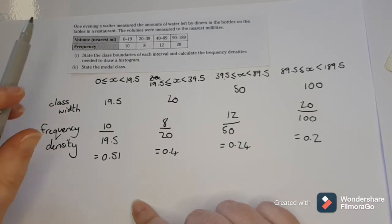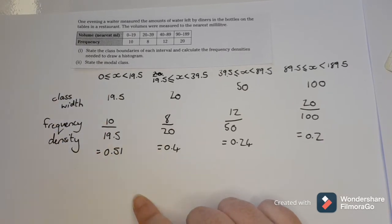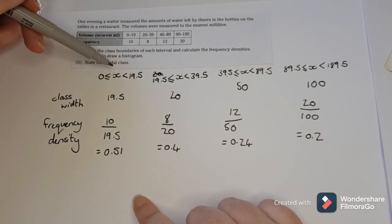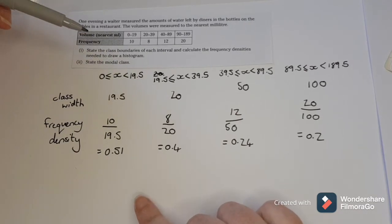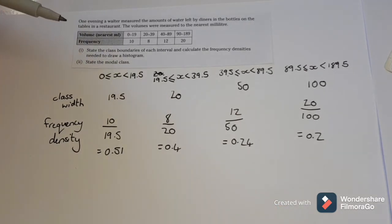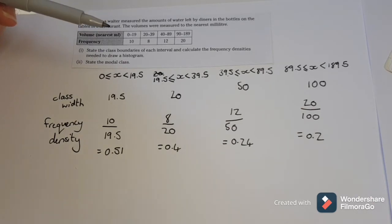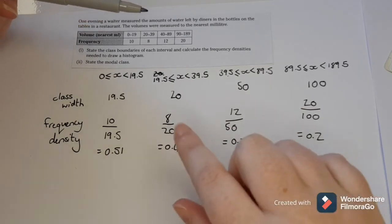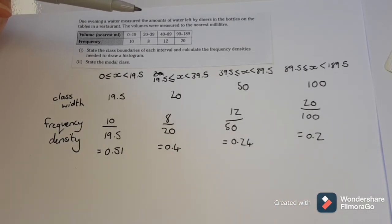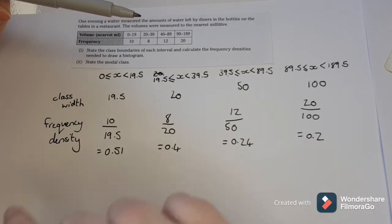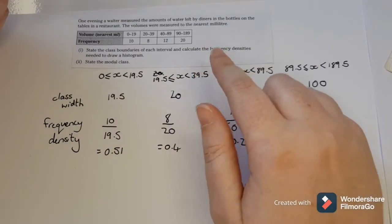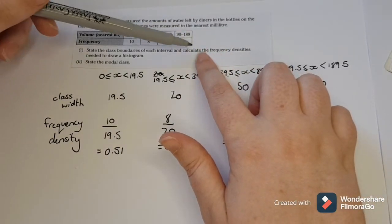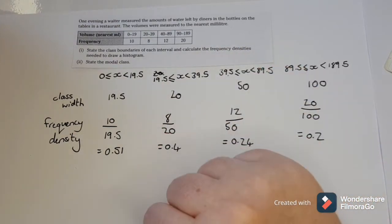There's an extra part in this question that says to state the modal class. The mode is the most common value, so the modal class is where we have the highest frequency. That would be the class with the largest frequency value, as it is the highest frequency.